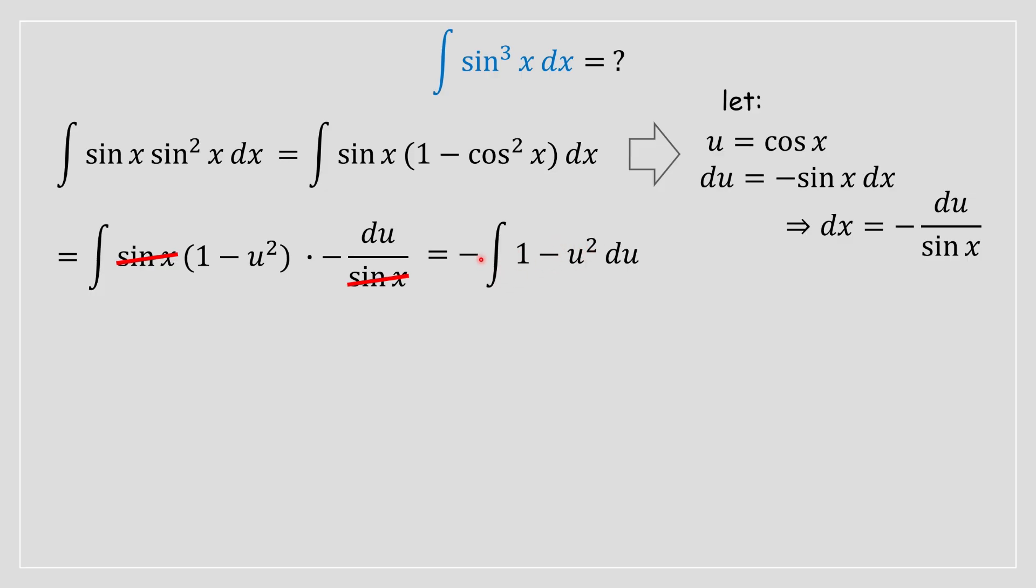The negative is going to be moved outside the integral just to make it simpler to solve. From here, we take the integral, and this is just a standard power rule. You're going to be applying it to the one term and then the negative u squared term. Once you've applied the power rule from integral calculus...